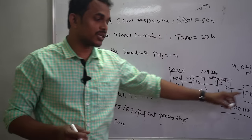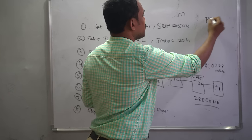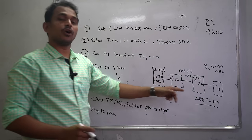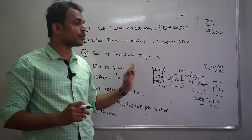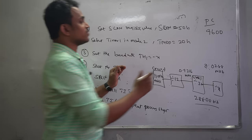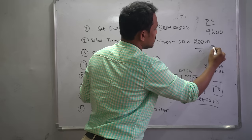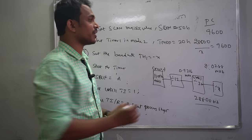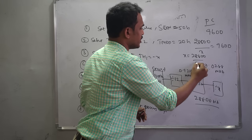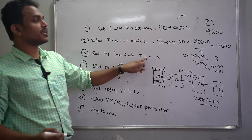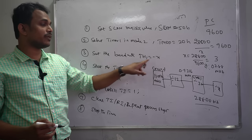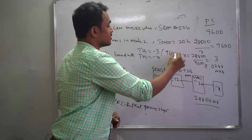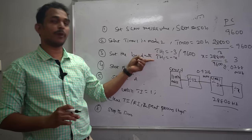To match the PC's standard baud rate of 9600 bps, equate the formula: 28800 / X = 9600. Solving gives X = 3. This value of 3 is placed in the TH1 register. Once X = 3 is loaded, the microcontroller's baud rate becomes 9600 bps, matching the PC. By changing the X value in TH1, you can set any desired baud rate for the microcontroller.